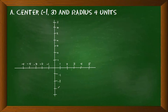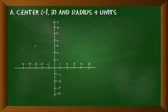We are done making the Cartesian plane. The second step is to identify the center and the radius. With this problem, the center and radius are given directly, so we only need to plot them and use the radius to create a circle. First, locate the point at negative 1 on the x-axis and 3 on the y-axis — that is now your center point.